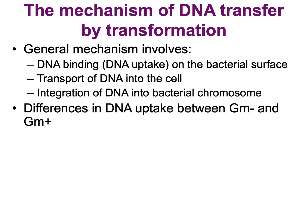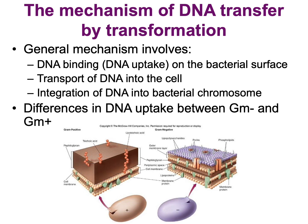Gram-positive cell wall contains a thick layer of peptidoglycan that encircles the cell, whereas gram-negative cell wall contains a thin layer of peptidoglycan situated between the cytoplasmic membrane and the outer membrane.